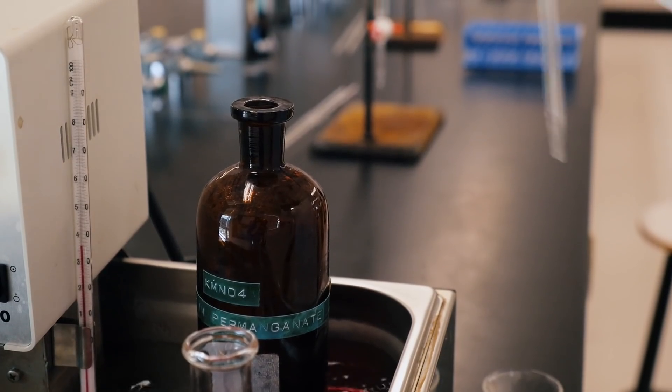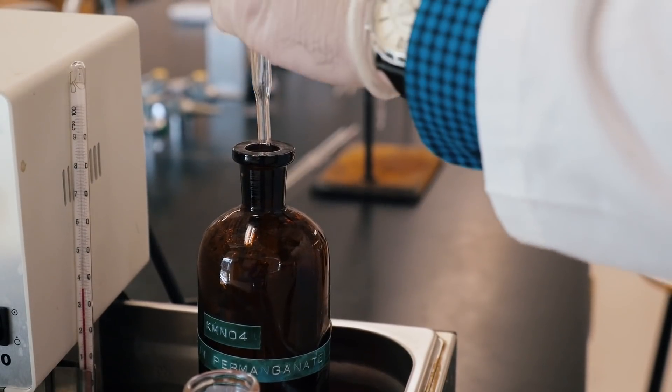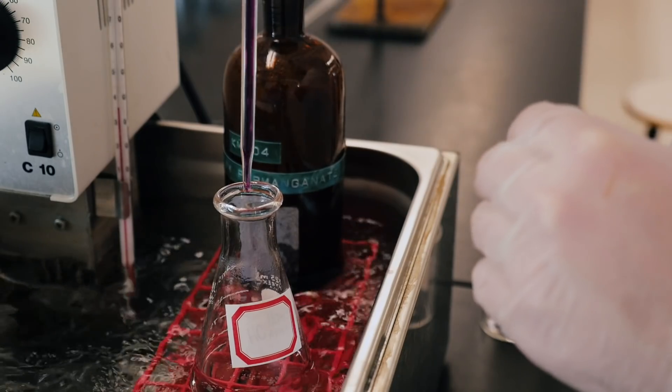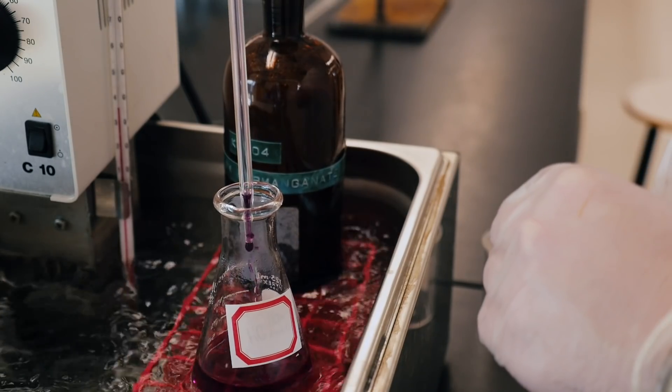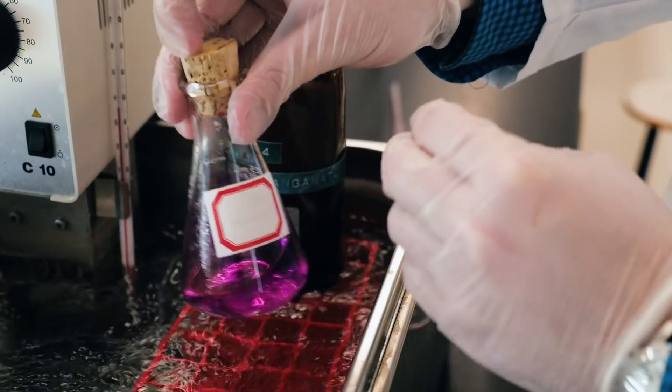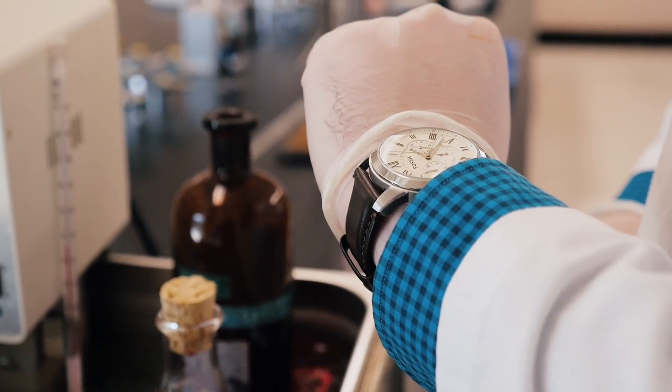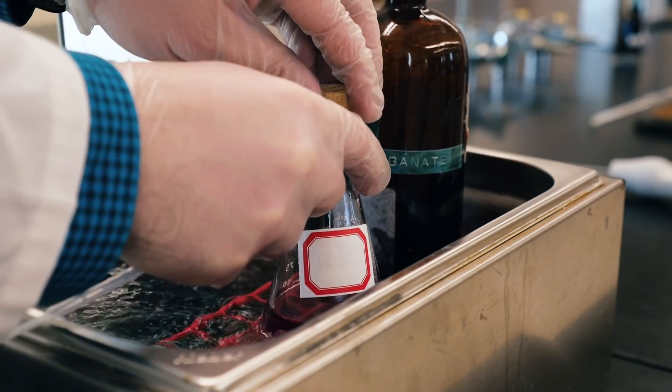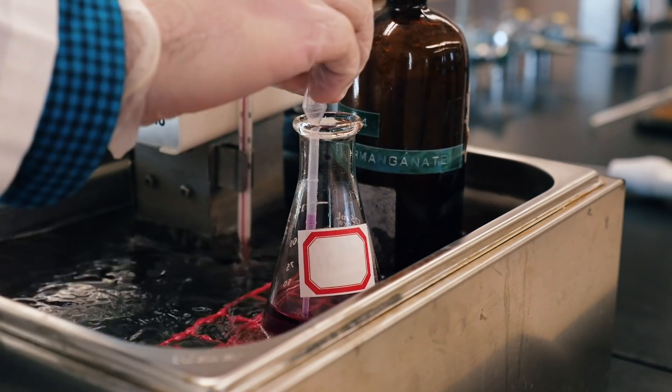Permanganate stock solution is already placed in the water bath for your convenience, so pipette exactly 5 mL of the hot permanganate solution into your Erlenmeyer flask that contains the benzyl alcohol solution and again note the time so that you know exactly when your reaction started. Keep your flask in the water bath the whole time so it remains at a constant temperature.